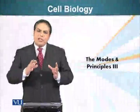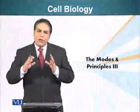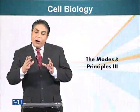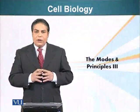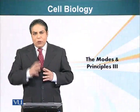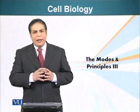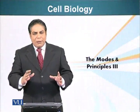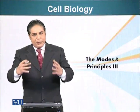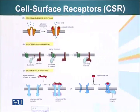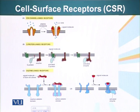We have established rules of engagement for intracellular receptors. Now let's do the same thing for the receptors which are present on the cell surface. Cell surface receptors, or CSRs, we can divide them into three basic categories.